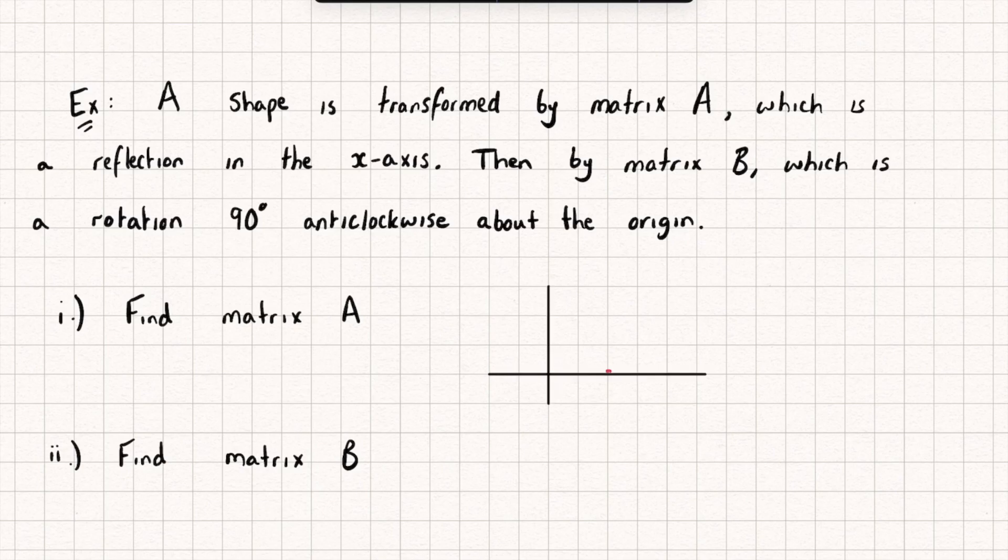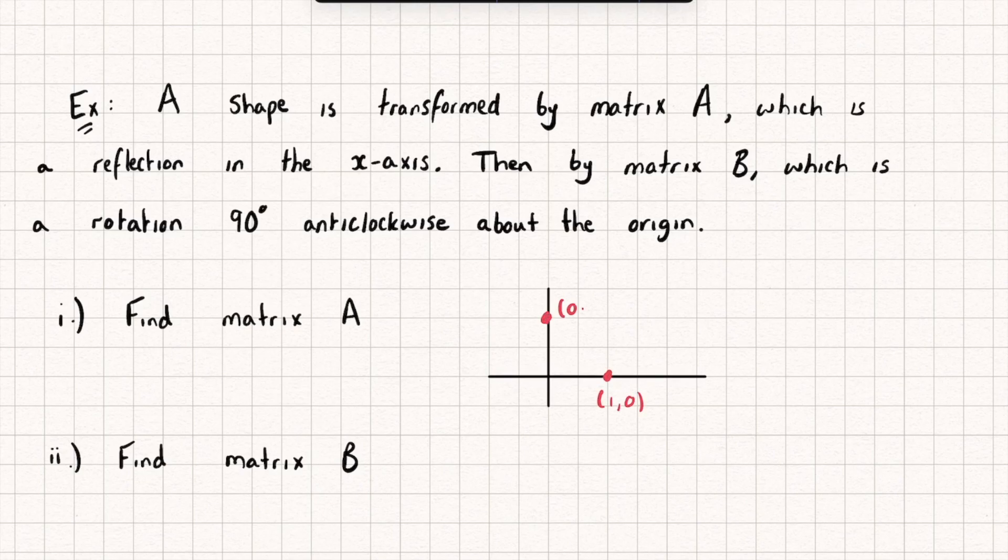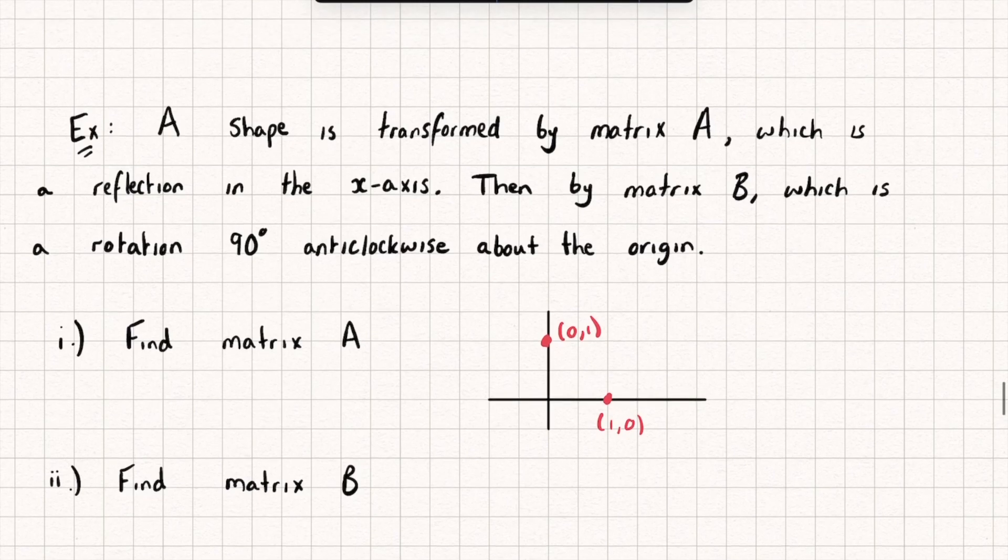all you need to do is see what happens to the points (1, 0) and (0, 1) under the transformation. So for matrix A, that's a reflection in the x-axis. The point (1, 0) is going to remain fixed. So that's the first column of my transformation matrix.